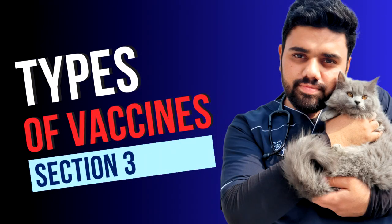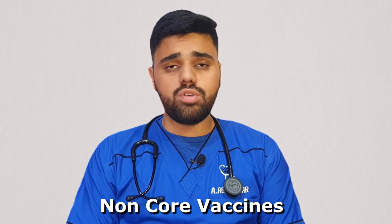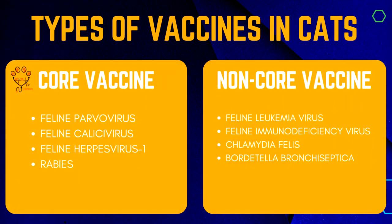Now we are talking about types of vaccines. There are two types: core vaccines and non-core vaccines. Core vaccines should be injected to all pets; however, non-core vaccines should be injected on the basis of prevalence of diseases and medical history. The core vaccines of cats include feline parvovirus (panleukopenia), feline calicivirus, and feline herpes virus. The non-core vaccines include FIV and feline leukemia virus.